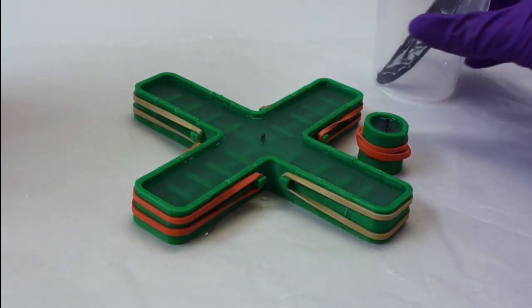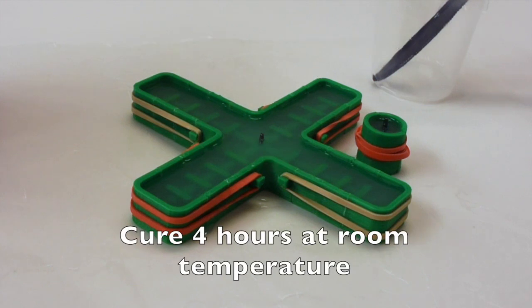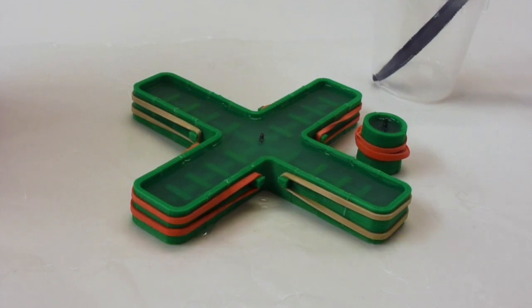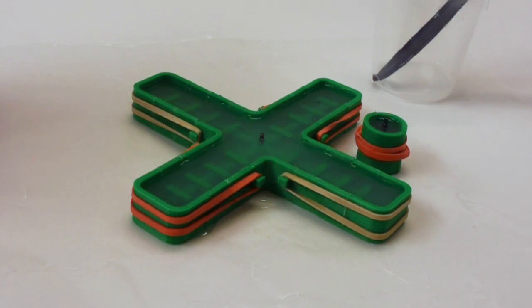Now it's time for the gripper to cure. EcoFlex will cure in about 15 minutes at 150 degrees Fahrenheit or 4 hours at room temperature. It is important to make sure the curing surface is completely level. This is the best way to get an equal amount of EcoFlex in each finger and therefore even inflation.